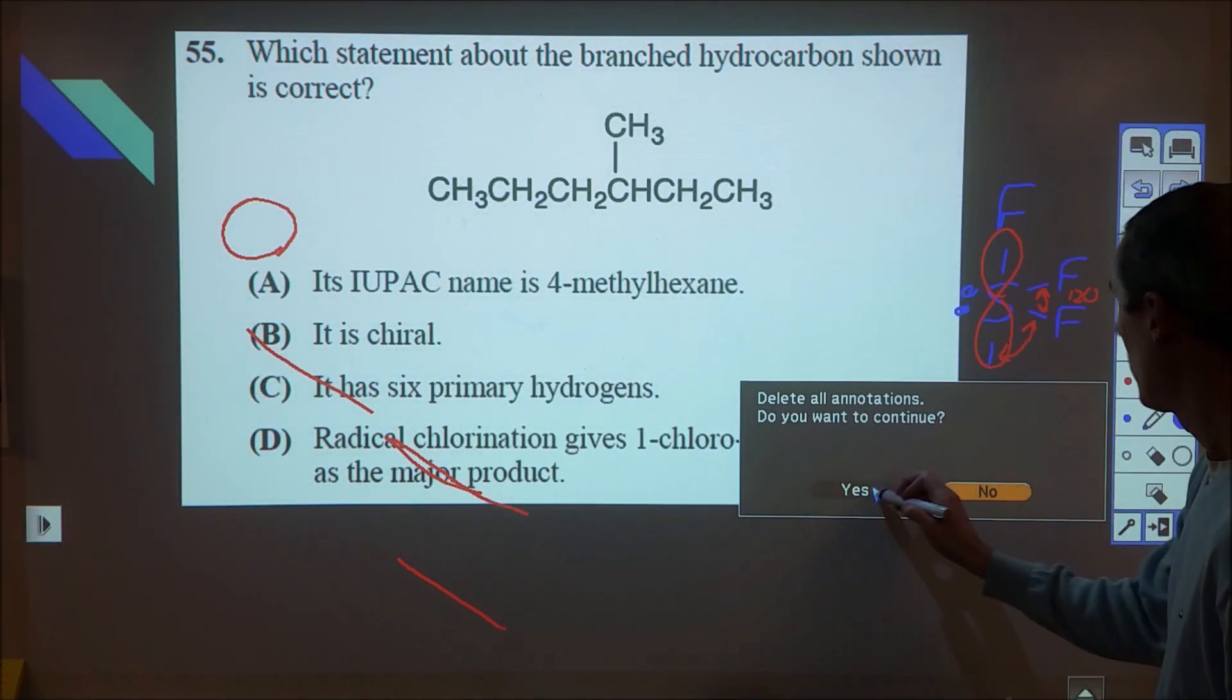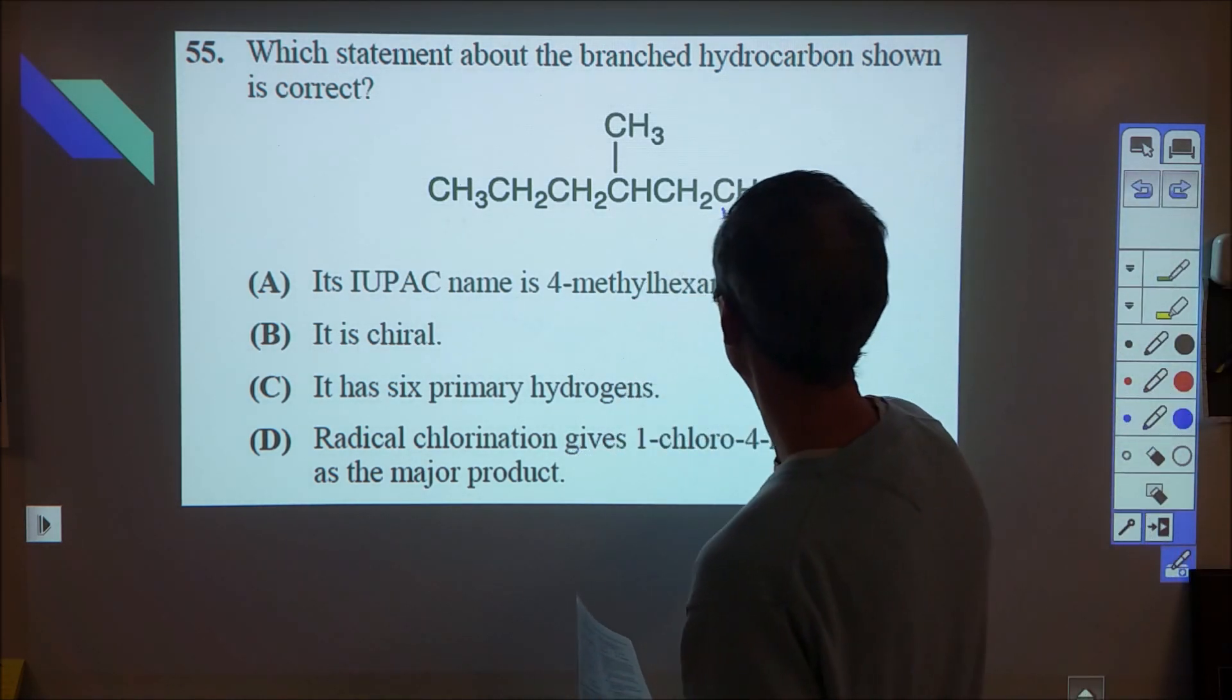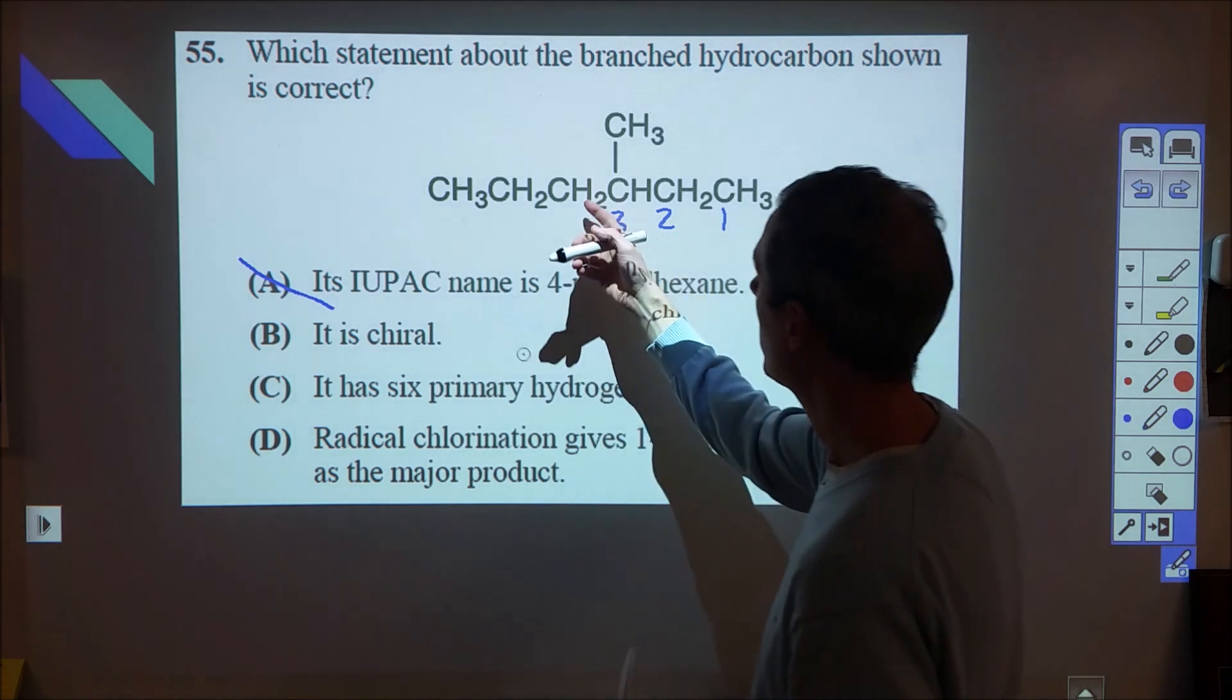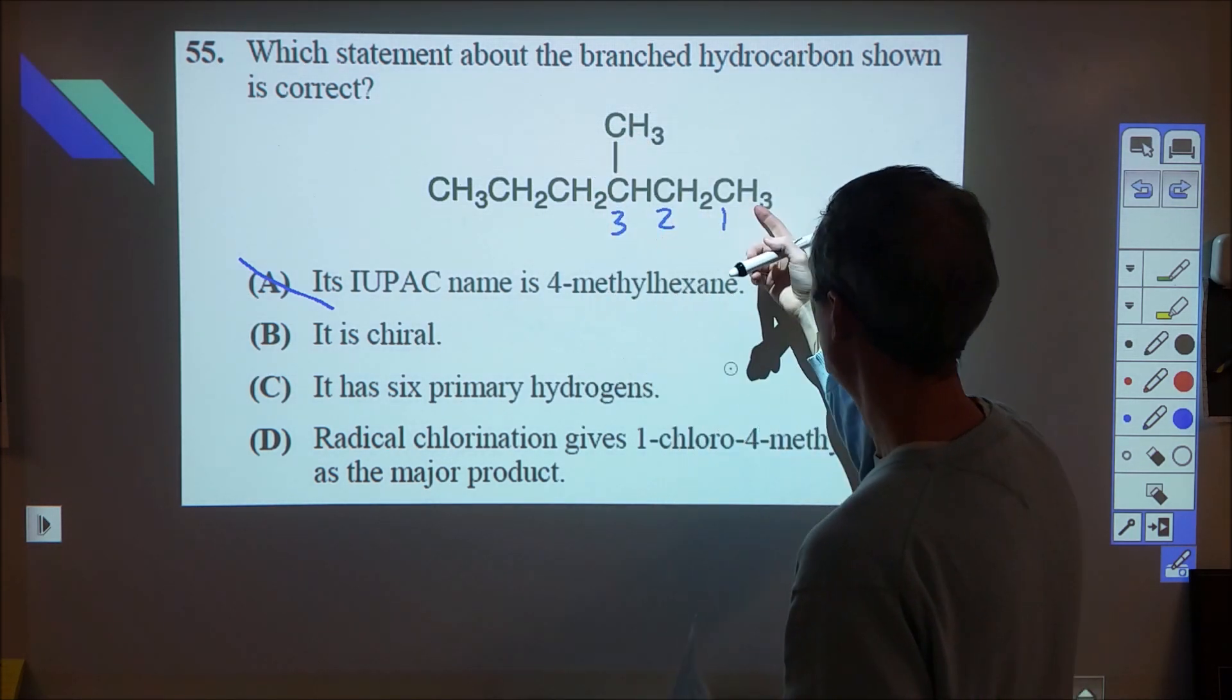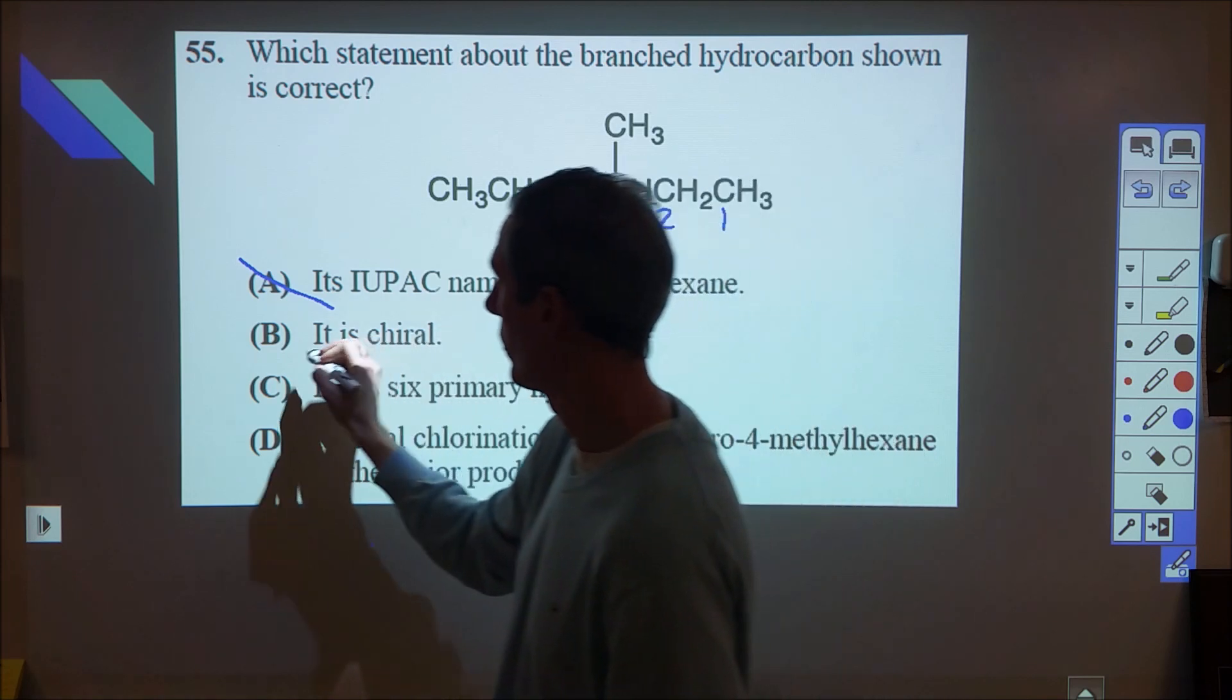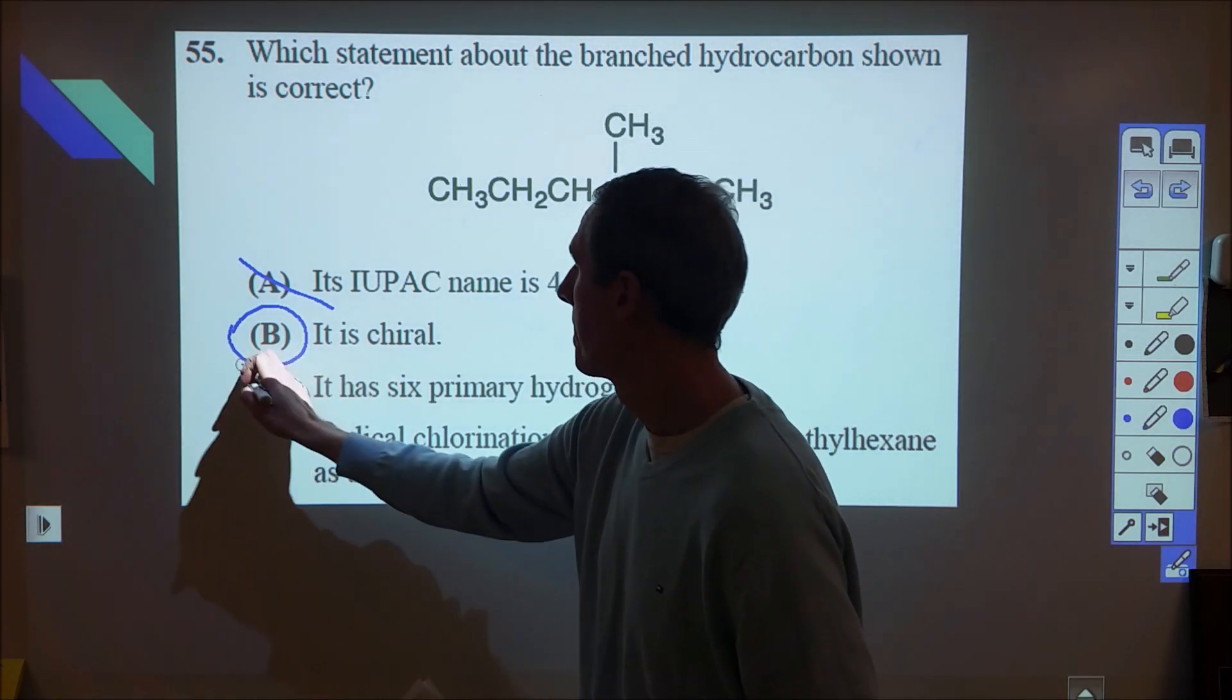All right, 55. I'm not 100% sure on one of the wrong answers here. The IUPAC name of this being 4-methyl is incorrect because we would start our chain on this side, but that's definitely a draw for a lot of people to put as an incorrect one. The chirality is correct because we have a carbon bonded to a hydrogen, a CH3, a CH2CH3, and a CH2CH2CH3. We have a hydrogen, one carbon, two carbons, three carbons. That's four different groups. B is going to be correct. Six primary hydrogens, it's just kind of gibberish. That's not correct.